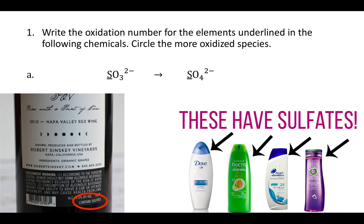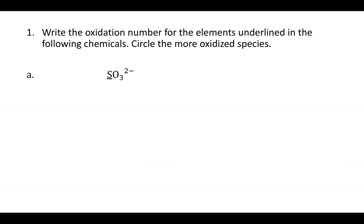Here's some help with the Experiment 8 pre-lab. Question 1 says: write the oxidation number for the elements underlined in the following chemicals, and circle the more oxidized species. On the left we have SO₃²⁻, that's sulfite, which is in wine. On the right we have SO₄²⁻, that's sulfate, which is found in shampoos and soaps. We want to find the oxidation number for sulfur in each of these ions.